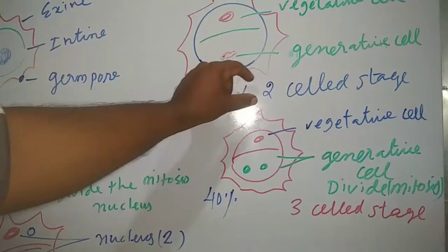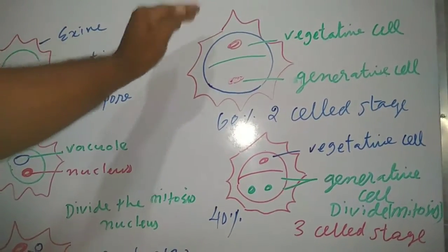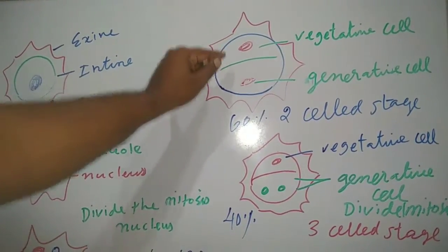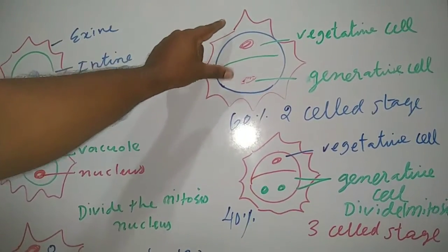The vegetative cell or vegetative nucleus and generative or generative nucleus. Sixty percent complete development of the pollen stops at the two-celled stage, that is all, only here.